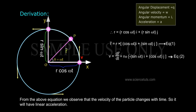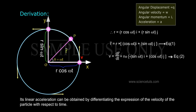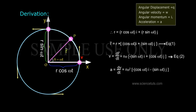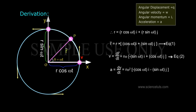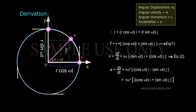From the above equation, we observe that the velocity of the particle changes with time, so it will have linear acceleration. Its linear acceleration can be obtained by differentiating the expression of velocity with respect to time: a = dv/dt = r·omega²·(−cos(omega·t)·i − sin(omega·t)·j).